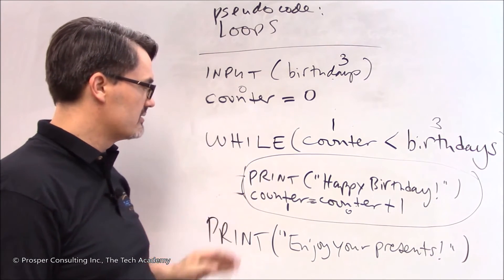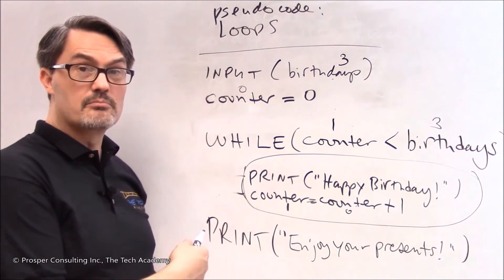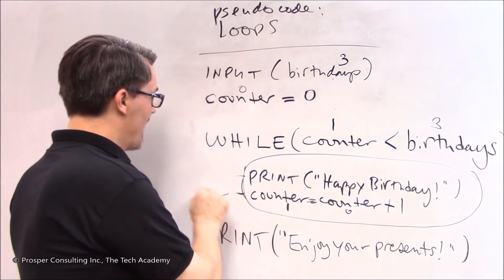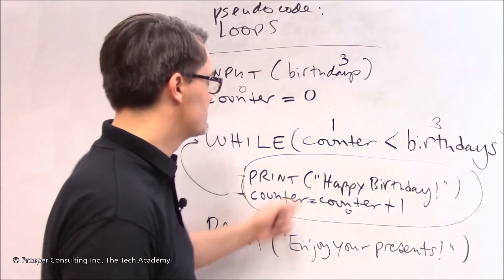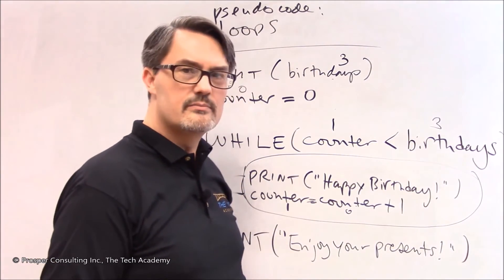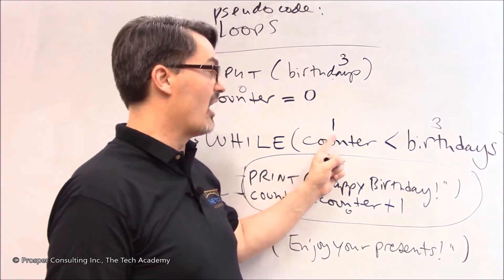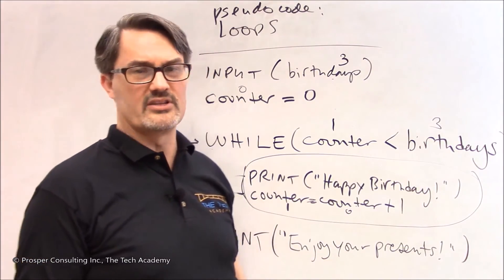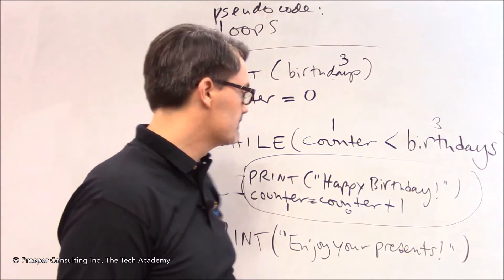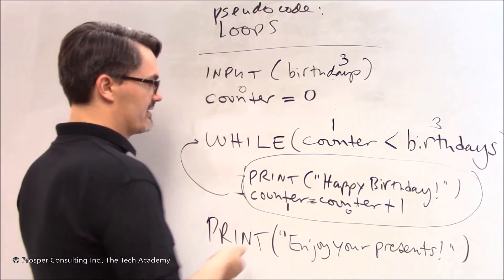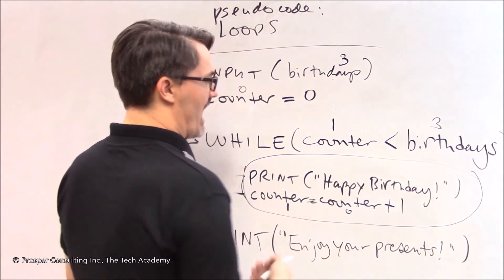And now the two instructions that are contained within this while instruction, the print and the increasing counter, they've been done. So now the computer goes back up here and checks again. It says is counter less than birthdays? Counter is equal to one now. Birthday stayed the same. We didn't do anything to change it. This is still true. One is less than three.